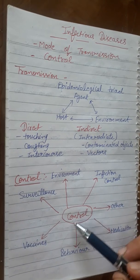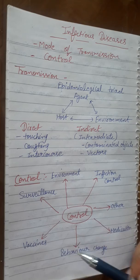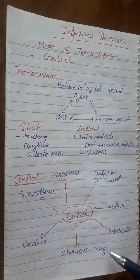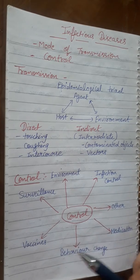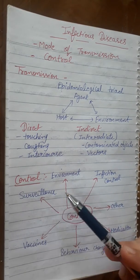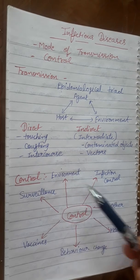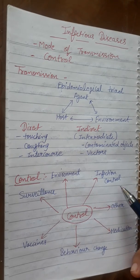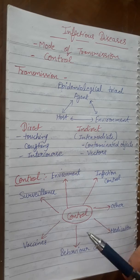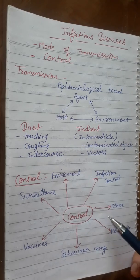How do we control infectious diseases? It can be controlled by behavior change, vaccines, surveillance, environmental measures, infection control programs, and medication. Let's have a look at each one.